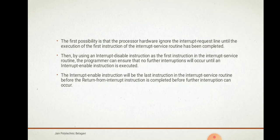The interrupt enable instruction will be the last instruction in the interrupt service routine. Once you have finished the ISR of the first interrupt, the second interrupt may have already occurred but was disabled. After executing the ISR of interrupt 1, interrupt 2 has occurred but was disabled. To enable it, the interrupt enable instruction should be the last instruction in the ISR of the first interrupt and should be completed before further interruptions can occur.